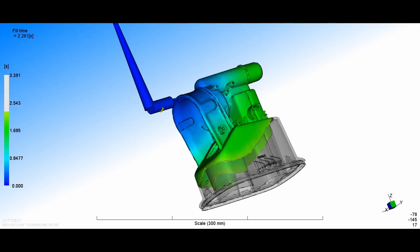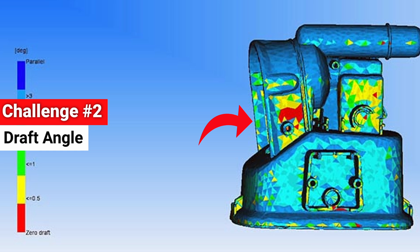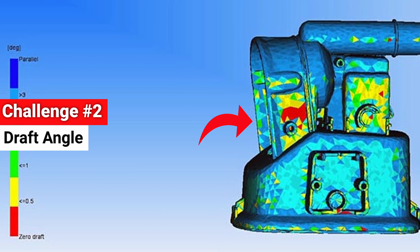After running a mold flow simulation, we uncovered the following concerns. First, we have these areas in red and yellow, with little or no draft angle.